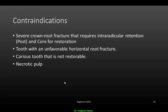Contraindications of apexogenesis: severe crown-root fracture requiring intra-radicular retention such as post and core for restoration; a tooth with an unfavorable horizontal root fracture; a carious tooth beyond repair or restoration; and necrotic pulp. For necrotic pulp in immature dentition, the treatment modality is apexification, which will be discussed in a subsequent lecture.